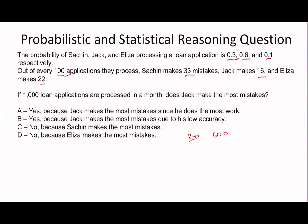That means out of the lot, Sachin does 300, Jack does 600, and Liza does 100 because it's 0.3, 0.6, and 0.1. Out of every 100, Sachin makes 33 mistakes, so Sachin is going to make three times the amount because you've got 300, which is 99. Jack makes 16, so that's going to be 96, and Liza makes 22, so it's just 22.